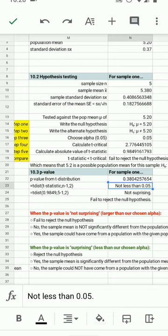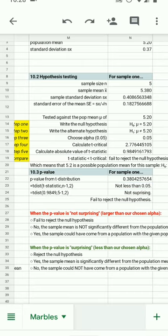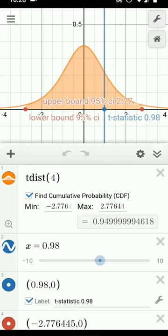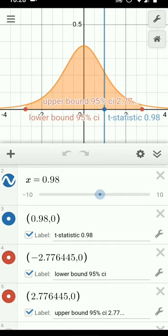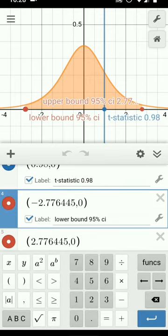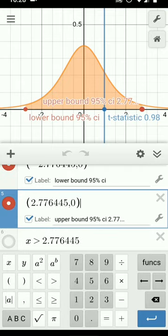To give you an idea of where that p-value comes from, there was a sketch for 10.2 showing the t-distribution. And the t-statistic at 0.98 was well within the 95% confidence interval, which ran from negative 2.77644 to positive 2.7644.